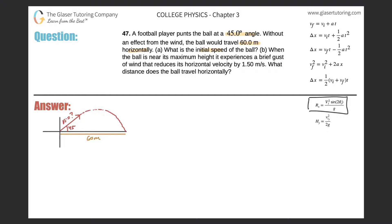That formula says that the range in x — meaning the distance traveled in the x-direction — is equal to the initial velocity squared times the sine of two times the initial angle, divided by g. By the way, this formula is only used when the ball is released from and lands at the same height.